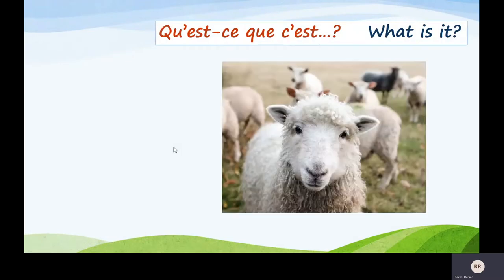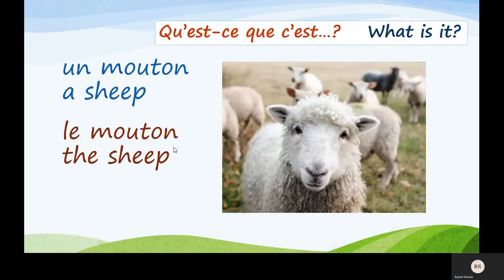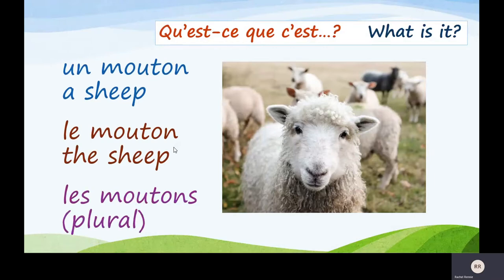Here's our first animal. Qu'est-ce que c'est? What is it? It's a sheep. How do we say that in French? Un mouton. Un is telling us it's a masculine word, so you can write that on the masculine side. Le mouton — that's how to say 'the sheep.' Les moutons is plural, if there's lots of sheep.